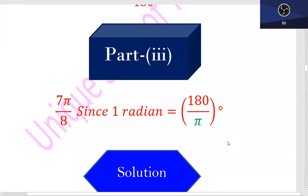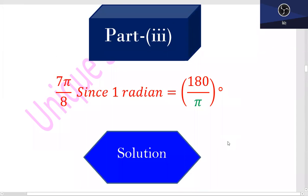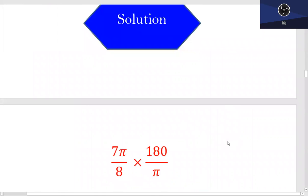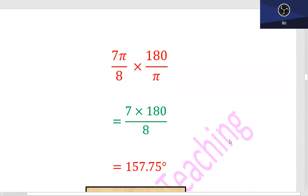Part 3 is equal to 7π upon 8. Using the same method and simplifying with a calculator, 157.75 degrees will be the answer.